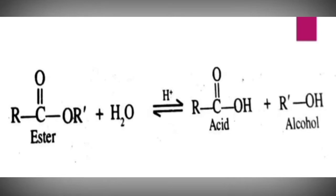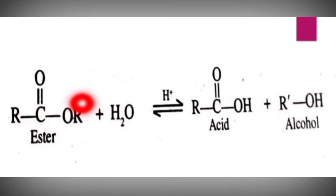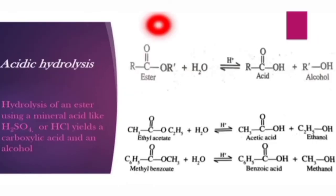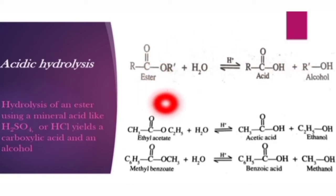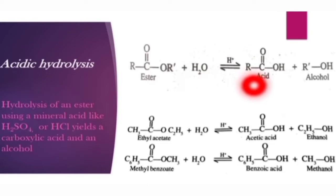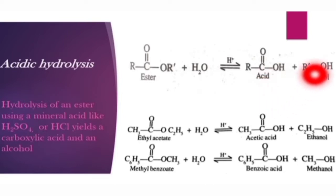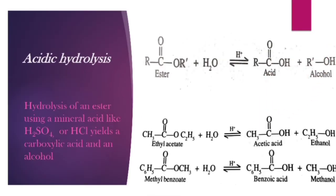Acidic hydrolysis is a reversible reaction, and the reverse reaction is esterification — where an acid reacts with an alcohol to give an ester and water. In the general reaction, when an ester is reacted with water in the presence of H₂SO₄ or HCl, it yields a carboxylic acid and an alcohol.